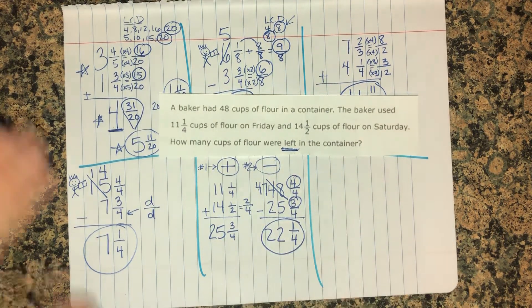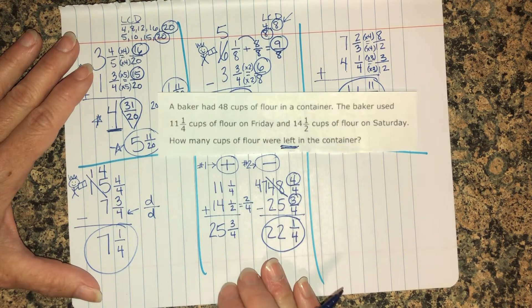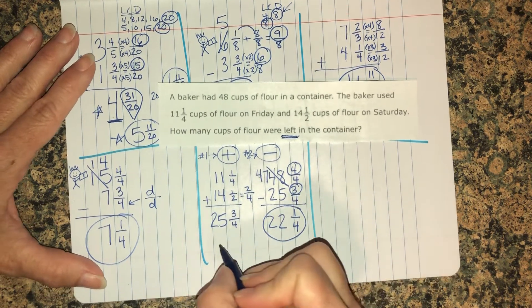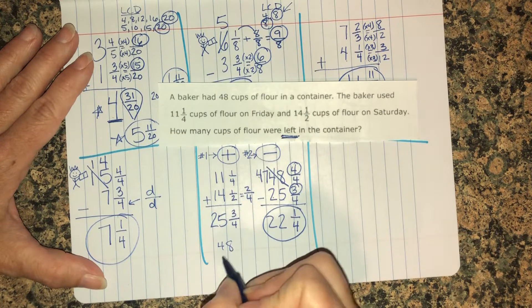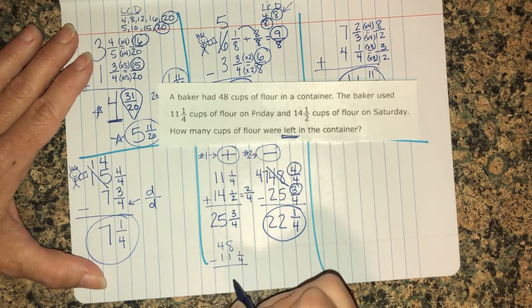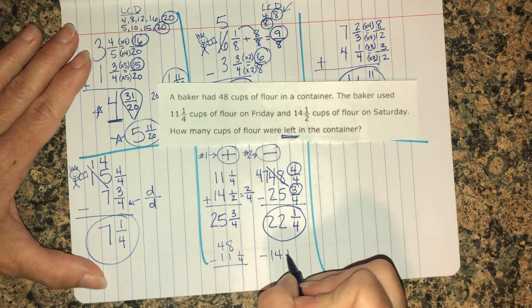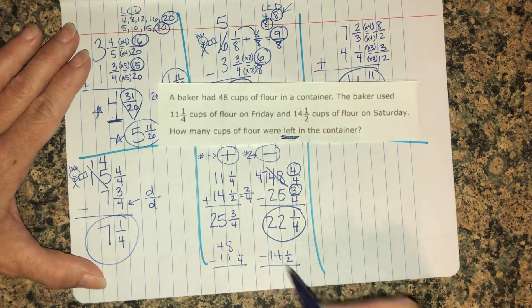So this is a two-step problem. I've seen some people do 48 minus 11 and 1/4 and then take your answer and subtract it by 14 and 1/2. That wouldn't be wrong, but this is just a little bit faster.